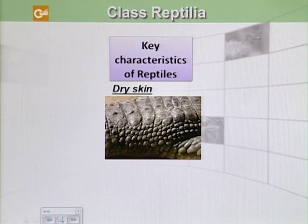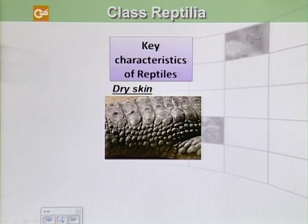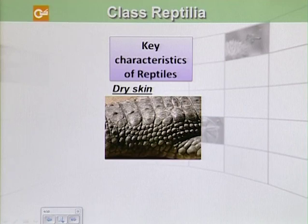These reptiles are known as amniots, as they have amniotic eggs. Another key feature is that they have dry skin. The skin of amphibians was kept moist because they undergo cutaneous respiration, while reptiles have dry skin to prevent water loss. They are no longer dependent on water and are totally land-dwelling animals. They may also have scales for extra protection and to retain internal moisture.